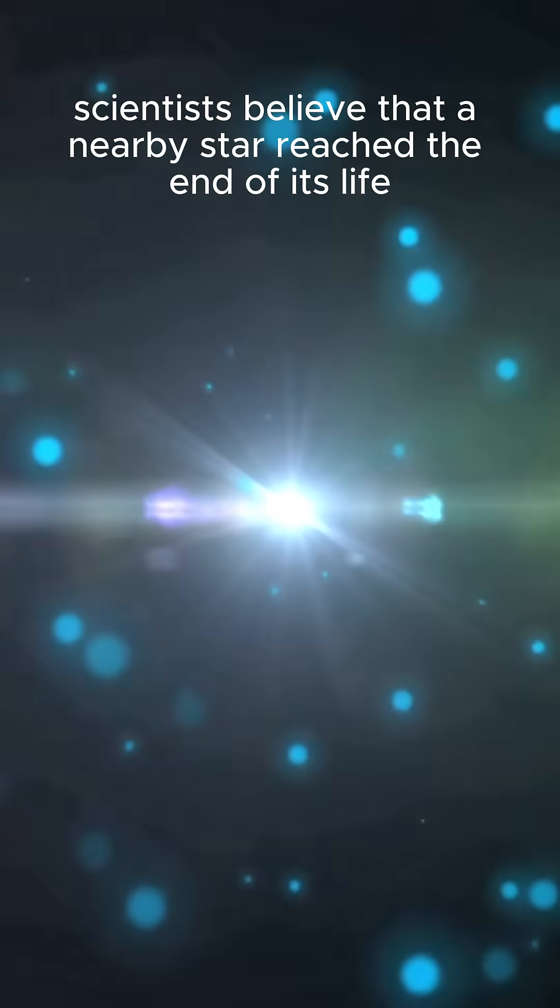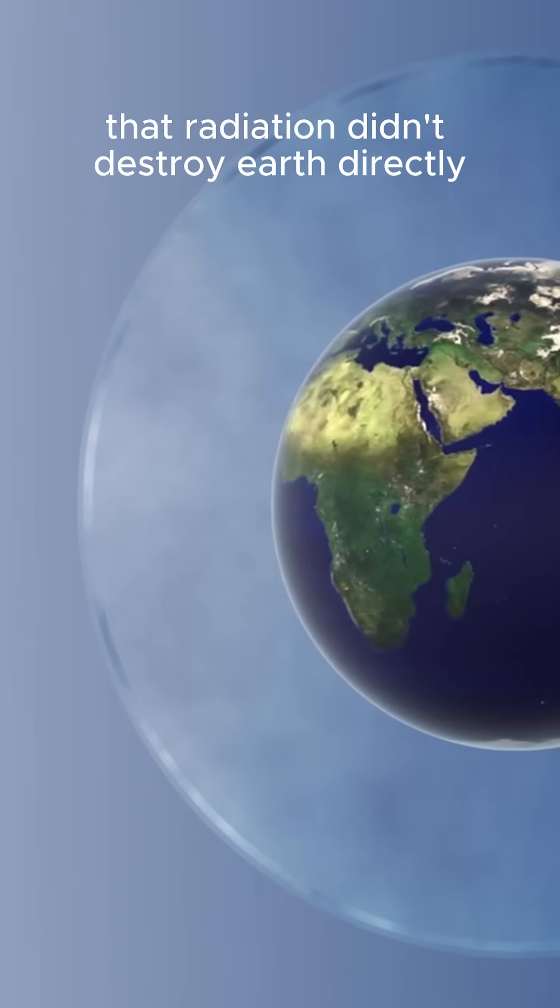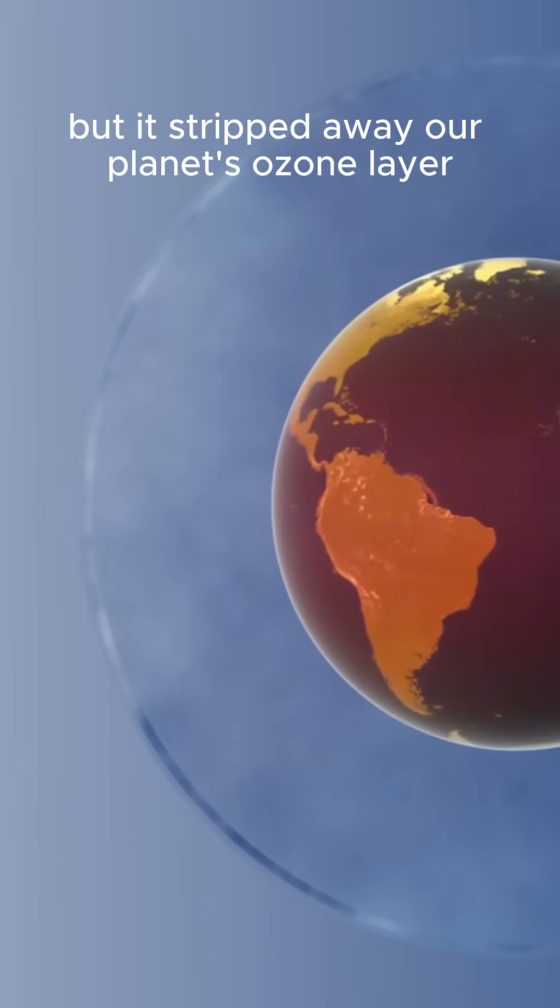A supernova explosion more than 65 light years away. Scientists believe that a nearby star reached the end of its life and exploded in a violent burst of radiation. That radiation didn't destroy Earth directly, but it stripped away our planet's ozone layer.